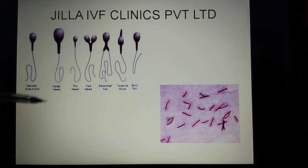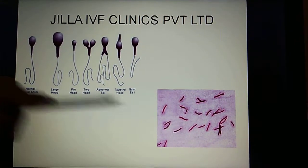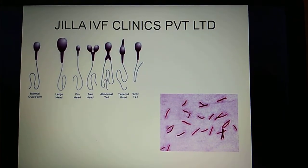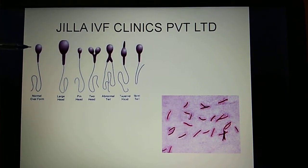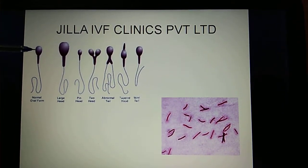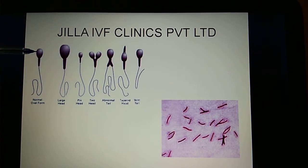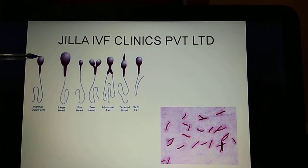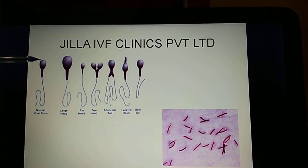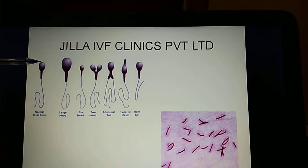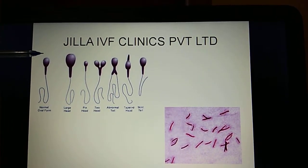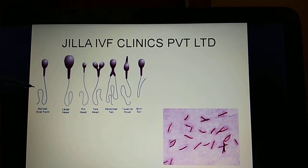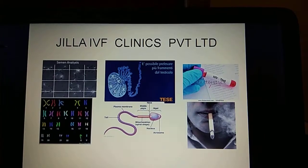Sometimes there could be bacteria present in the semen, which would also damage the sperm membrane. The sperm head contains all the 23 chromosomes in the male. The acrosomic cap contains enzymes that will digest the cover of the egg, and the tail helps the sperm in rapid movement.